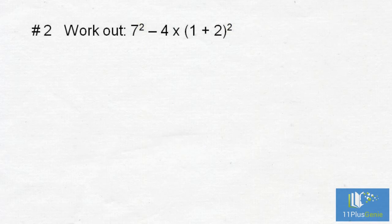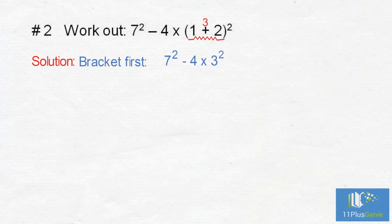Number 2: work out 7 squared take away 4 times 1 plus 2 squared. Solution: are there brackets? Yes, so we do the bracket first. 1 plus 2 equals 3. We now have 7 squared minus 4 times 3 squared.